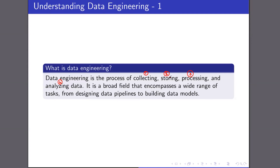All four steps — collect, store, process, and analyze — put together is what data engineering is and what data engineers do when they say they are building a data pipeline. As a data engineer, your job is to design this pipeline: how to collect data coming in various formats from multiple geographical locations, how those systems integrate with databases or storage devices, how to process it using various tools in real time or batch, and finally how to analyze the data and put it on a dashboard, building data models for analysis.